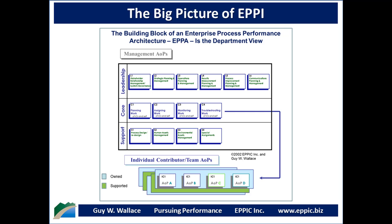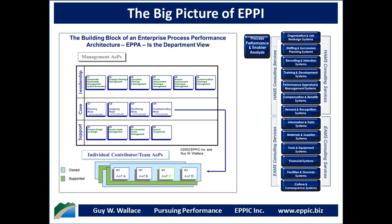We can look at the building blocks of an enterprise process performance architecture and do that at the departmental level. We can look at the leadership processes, the core processes, and the support processes. Note that many of these processes are shared — one department might own a process and have other departments' staff working in it. If we find process performance issues, we go to the provisioning systems upstream and review those for the improvements that they might make in their departmental processes.